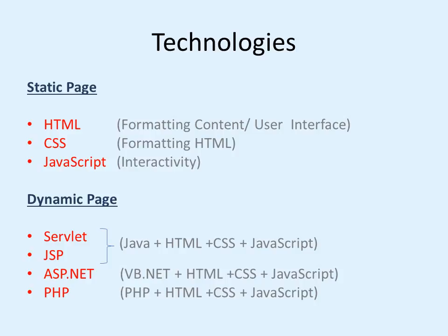When we come to dynamic pages, the technologies used are Servlet, JSP, ASP.NET, and PHP. Servlet and JSP use HTML, CSS, and JavaScript plus Java. ASP.NET may use VB.NET or C#.NET plus HTML, CSS, and JavaScript. Similarly PHP uses PHP language along with HTML, CSS, and JavaScript. So one should be good at Java, HTML, CSS, and JavaScript, and know how to use all of them together. This is a bit difficult, but many tools are available nowadays for developing dynamic pages easily without knowing all the details of these technologies.